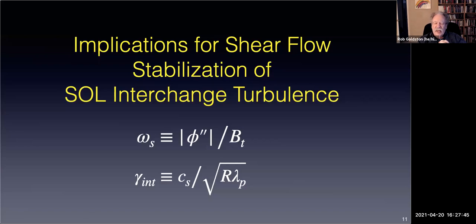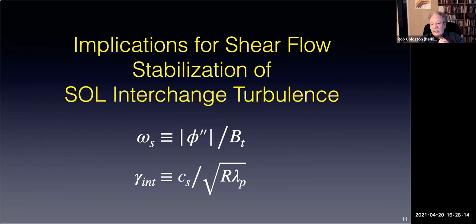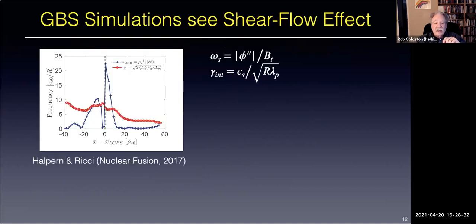What are the implications for shear flow stabilization of scrape-off layer interchange turbulence? Could this stabilize drift waves or ballooning modes? We didn't find an immediate answer, but we started looking at shearing rate implications. If I have a scrape-off width and can figure out the potential and take its second derivative, I get a shearing rate in the scrape-off layer. Is it the shearing rate across the separatrix that matters? That's somewhat bigger, depending on what width you choose for the shearing distance. Then there's the standard interchange growth rate. Now let me go to the theory.